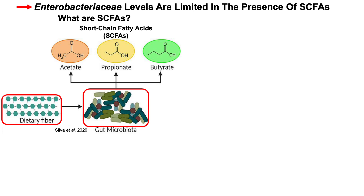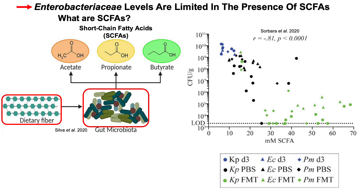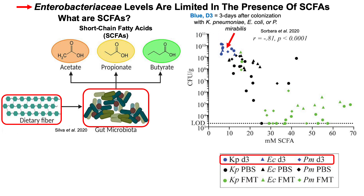Enterobacteria levels are limited in the presence of SCFAs — let's look at that data. Young mice, about two months old, were treated with antibiotics and then colonized with three different bacterial species: Klebsiella pneumoniae, E. coli, or Proteus mirabilis — shown as blue circles, triangles, and diamonds respectively.